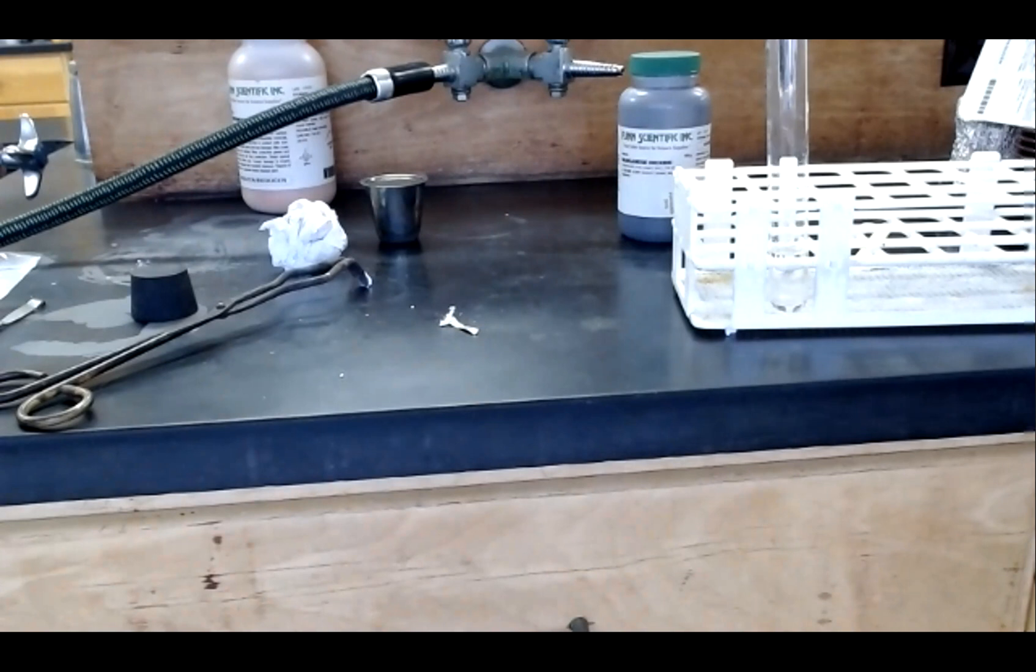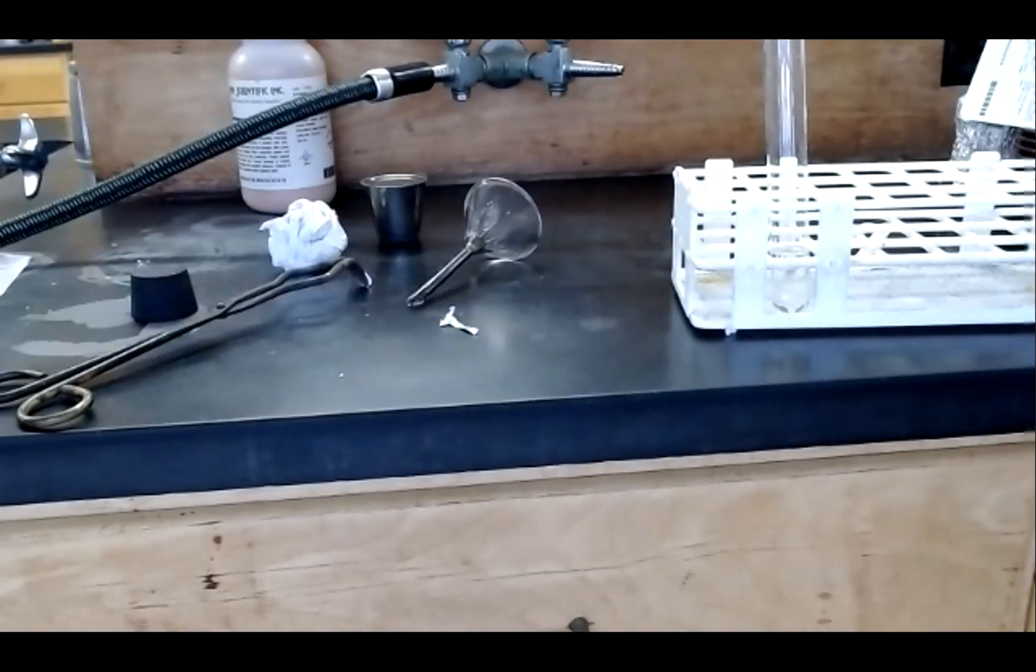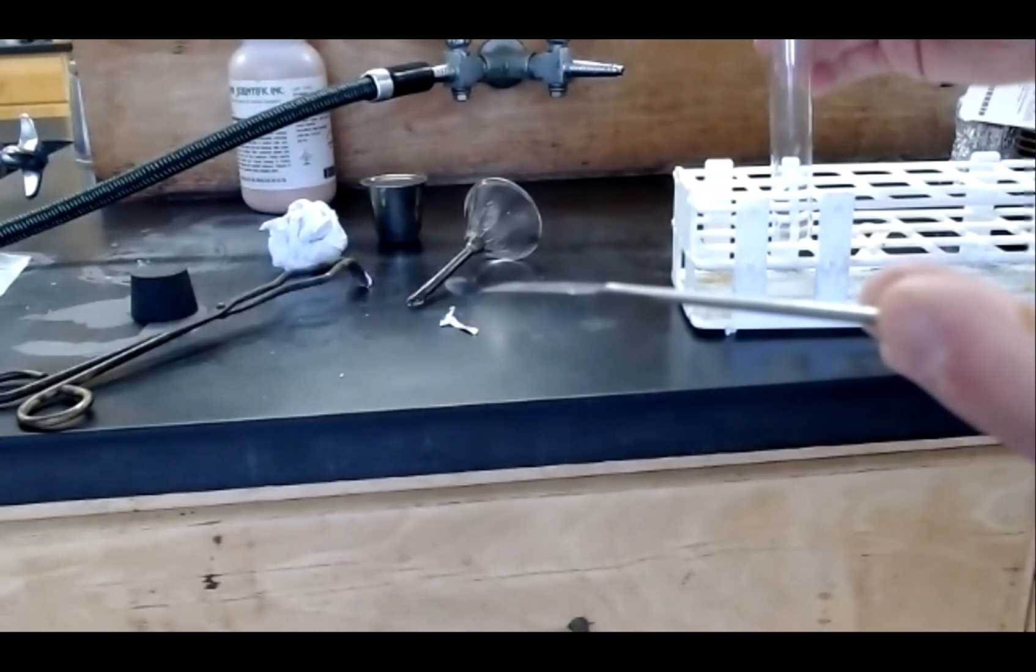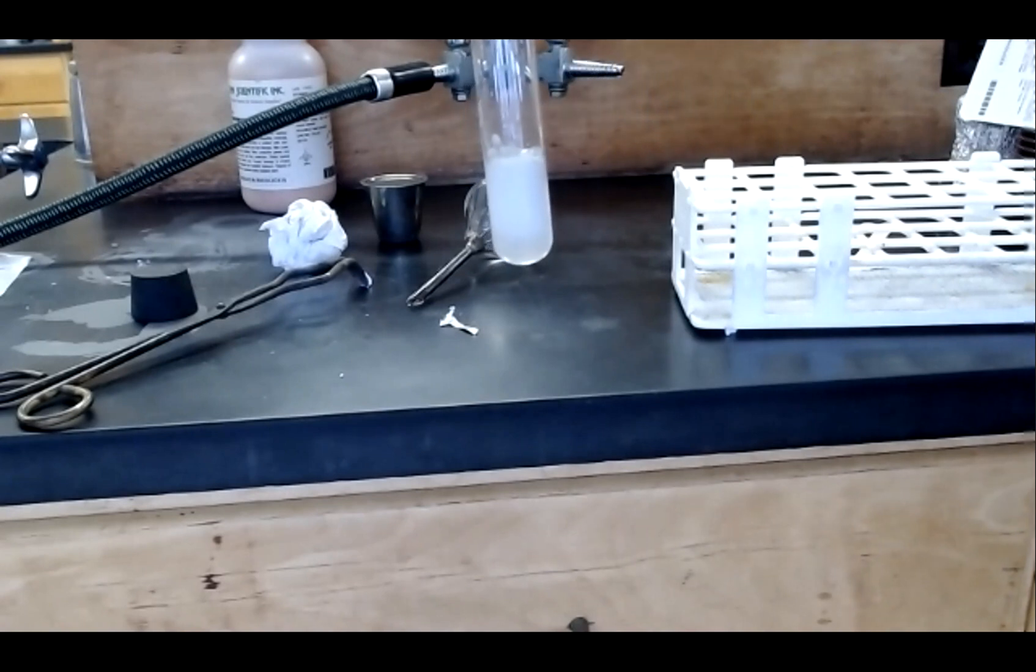And then I'm going to use a catalyst called manganese dioxide to decompose that hydrogen peroxide. A catalyst is a substance that speeds up a reaction, but does not itself get consumed in the reaction. As you can see, there's a very small amount of manganese dioxide on the end of the spatula. Putting it in, it causes the rapid decomposition of that hydrogen peroxide.